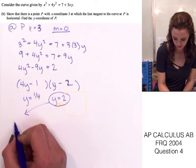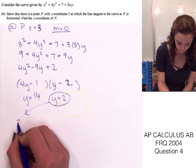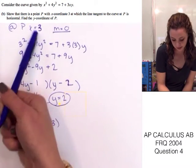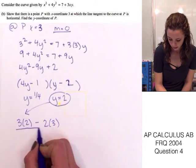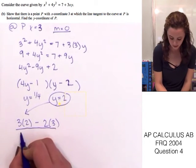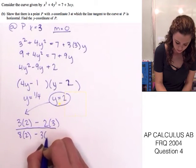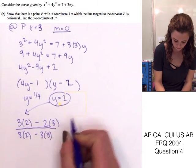The derivative function was 3y minus 2x. So, 3 times 2 minus 2 times 3 because x is 3. All over 8 times y. So, 8 times 2 minus 3 times x. So, 3 times 3.